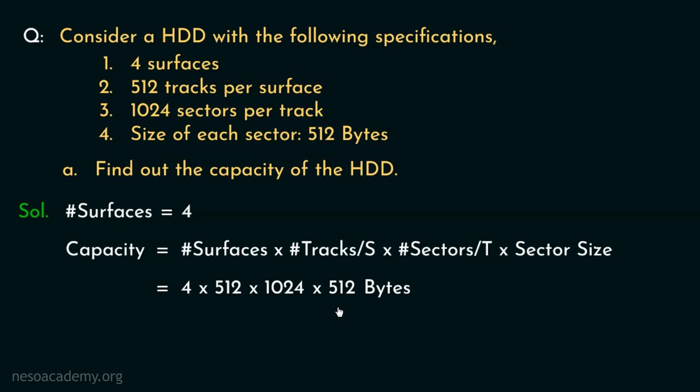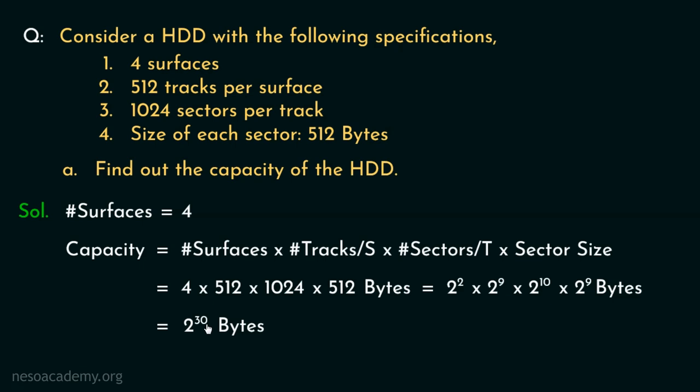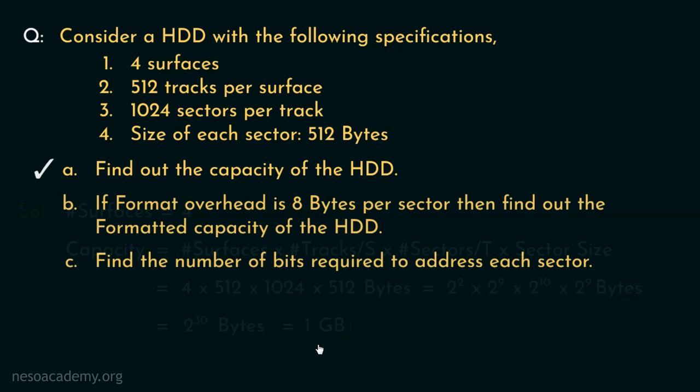Let me illustrate. 4 is 2², 512 is 2⁹, 1024 is 2¹⁰, and again 512 is 2⁹. Now 2 + 9 = 11, plus 10 = 21, and 21 + 9 = 30. So the capacity is 2³⁰. And 2³⁰ bytes is 1 gigabyte. So the capacity of the hard disk is 1 gigabyte.